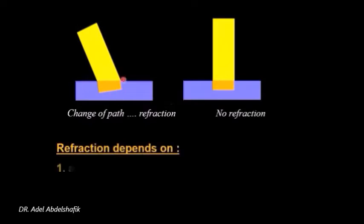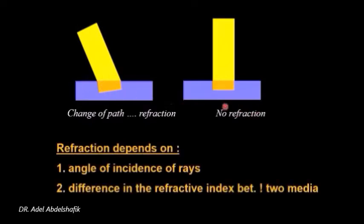When light hits a surface with an angle there will be a change of path. While if the light is perpendicular it will continue on the same path. So in this case we'll say there's refraction. While in the other case there is no refraction.